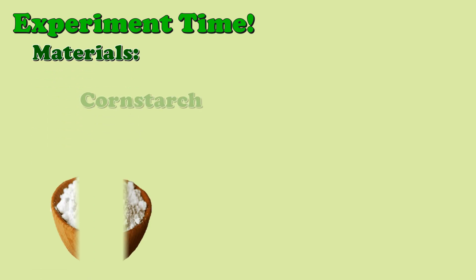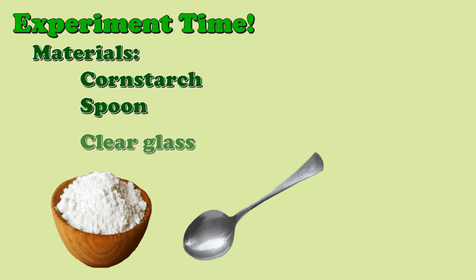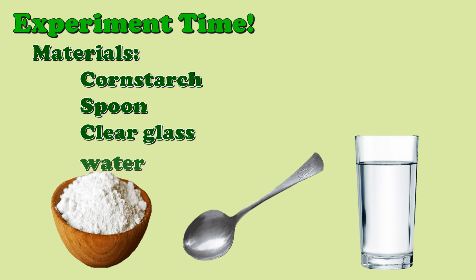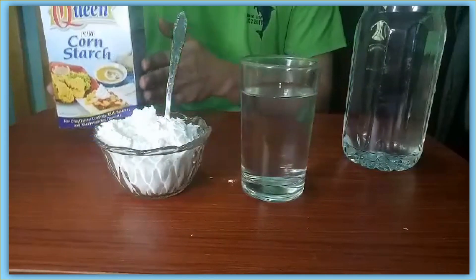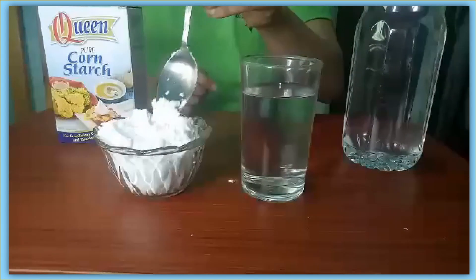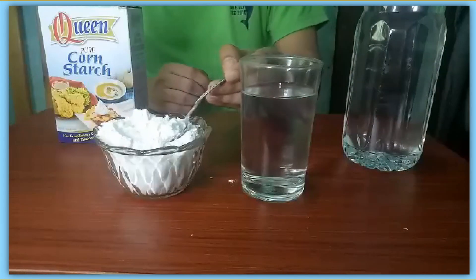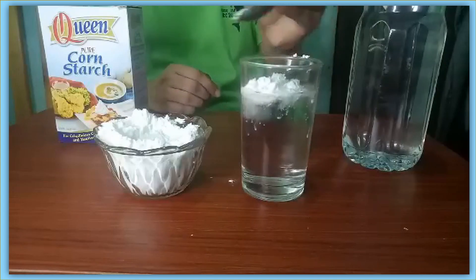Now let's have an experiment. In this activity, the materials we need are cornstarch, spoon, clear glass, and water. First, you need to prepare the materials. Now, put 5 tablespoons of cornstarch in a clear glass with water.